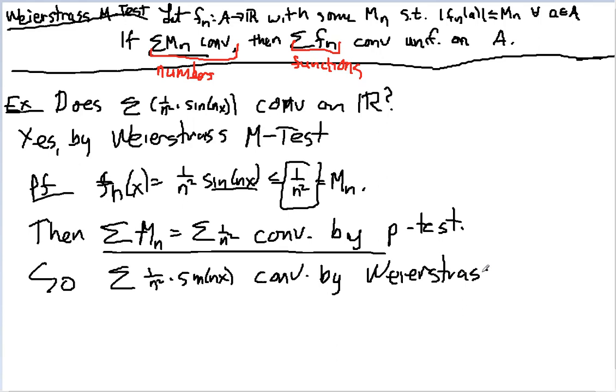So this is just a simple example. But notice, I use very basic results to prove it, and the Weierstrass M-Test. I just need to prove that 1 over n squared converges, which is a much, much easier question than this function here.